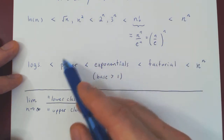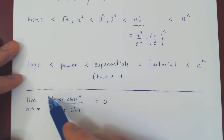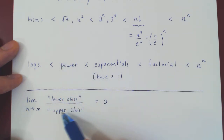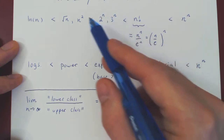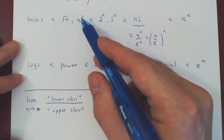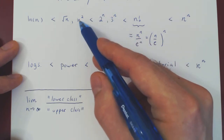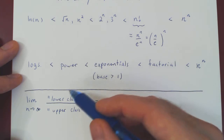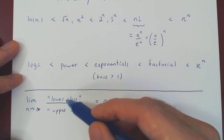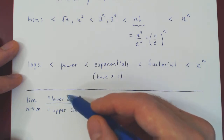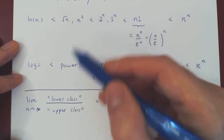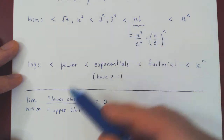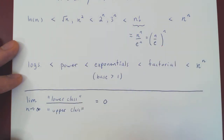The same thing applies if you take a lower class function that is a power function over an upper class that is an exponential function. Take for example n squared over 2 to the n — you will have an infinity over infinity case. If you apply L'Hôpital's rule twice, you will find again a limit of zero.